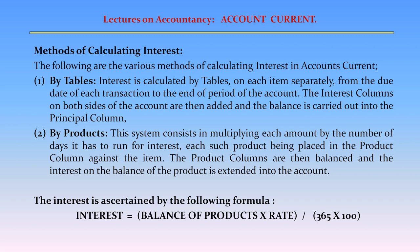Method 2: By Products. This system consists in multiplying each amount by the number of days it has to run for interest, each such product being placed in the product column against the item. The product columns are then balanced and the interest on the balance of the products is extended into the account. The interest is ascertained by the formula: Interest = Balance of Products × Rate / (365 × 100).